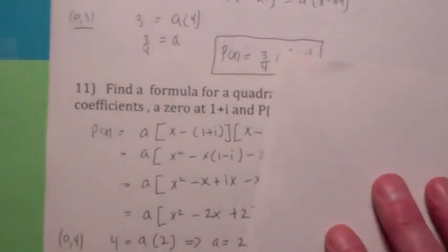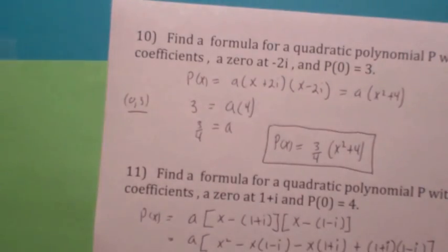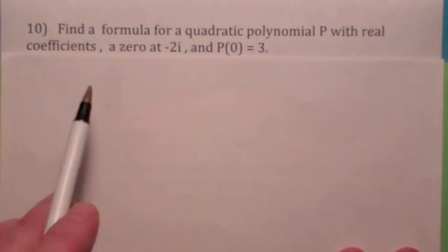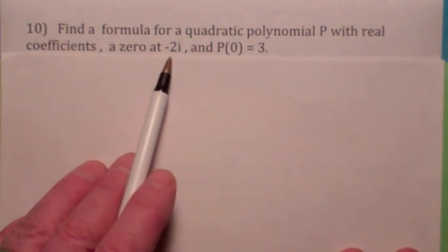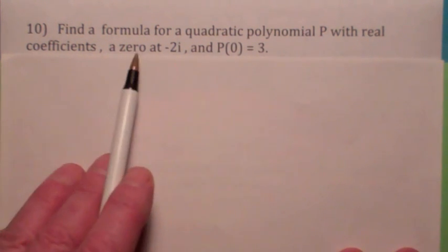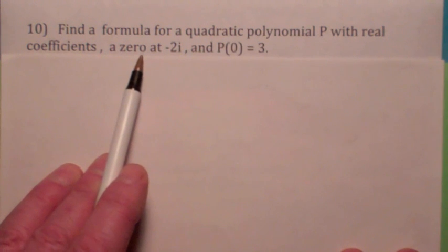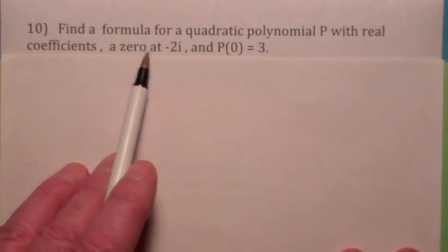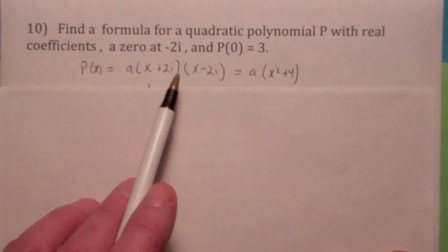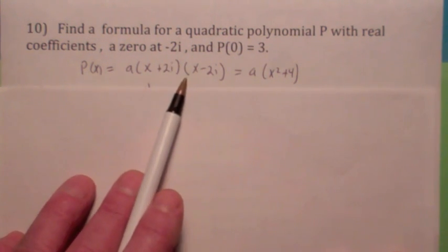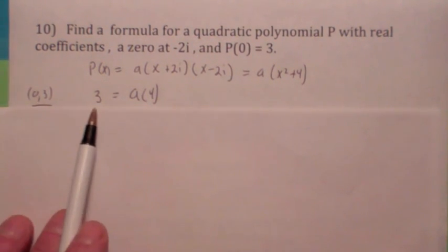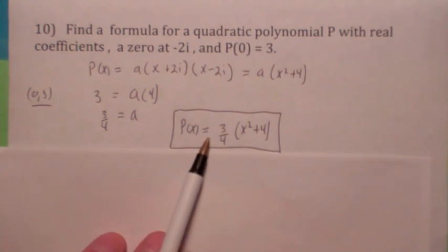All right, we've got time for some fun stuff now. Let's do some fun stuff. Find the formula for a quadratic polynomial with real coefficients. If it has a zero here at -2i, and P(0) = 3. Now, from what I just said, the zeros, if it has real coefficients and you have a non-real zero, they have to occur in conjugate pairs. So, what is the conjugate of -2i? It would be +2i. So if those are your zeros, you can write it as factors like this. When you multiply them together, you get this, and you can find a by plugging in the point (0,3), and so a = 3/4. There's your polynomial function.